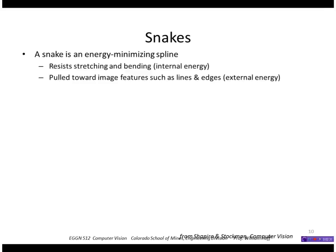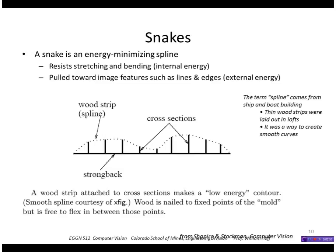A snake is an energy-minimizing spline. It's like a physical object that resists stretching and bending, so it has some internal energy, and it's pulled toward image features such as lines and edges, minimizing some external energy. The word spline comes from the technique used to build ships and boats — the cross-section of the boat would be laid out in a loft, and then a thin wooden strip or spline would be fastened to those points, forming a smooth curve, and the dimensions could then be taken to form the hull of the ship.